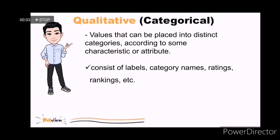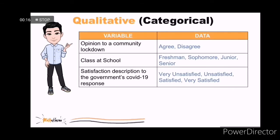The first type of data is called qualitative because these are values that can be placed into distinct categories according to some characteristic or attribute. It can consist of labels, category names, ratings, and rankings.